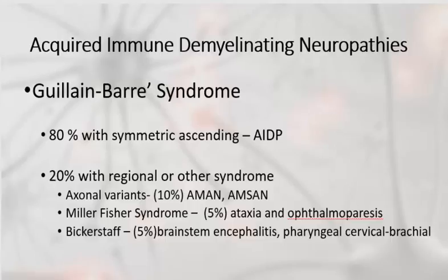Then there are the variants of Guillain-Barré, including Miller-Fisher syndrome, which is about 5% of all Guillain-Barré's, and presents with ataxia and ophthalmoparesis but not actual weakness. And then there is Bickerstaff syndrome, also about 5%, which includes a brainstem encephalitis and has particular antibodies associated with it.